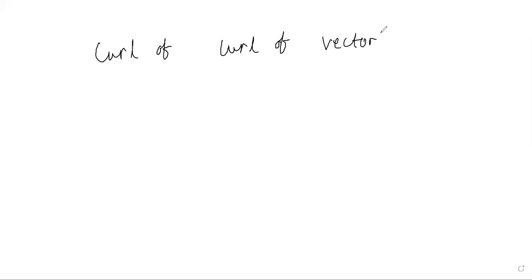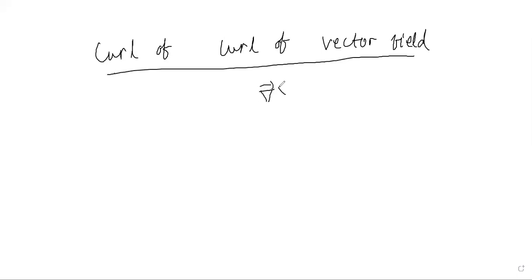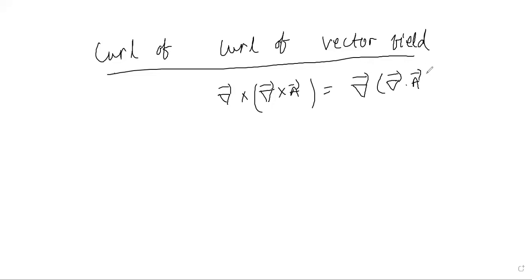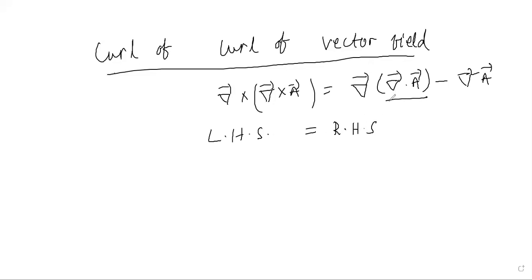One more property: the curl of the curl of a vector field. The curl of A is del × A, so curl of curl is del × (del × A). You can show this equals ∇(∇·A) − ∇²A, where ∇·A is the divergence of the vector field and ∇²A is the Laplacian. You can verify this by expanding either side.